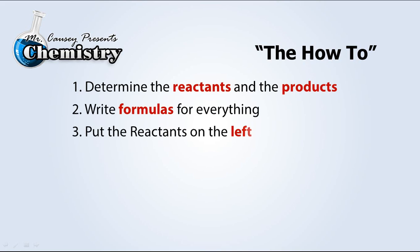Let's look at the how-tos of writing chemical equations. One, determine the reactants and the products. Write formulas for everything, then put the reactants on the left, draw an arrow, and put the products on the right, and then balance.